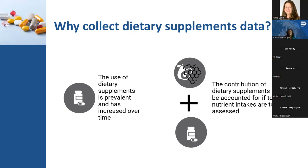As Dr. Cohen was saying, if we do not include the nutrients that come from these dietary supplements, we are likely to overestimate inadequacies of intake. And we also are likely to underestimate the intakes that are above the upper intake levels when we are looking at population level intakes. When we are looking at usual intakes, which is of importance for those of us who are looking at health-related outcomes, it is important to account for this because some intakes from both sources — foods and beverages plus supplements — can be quite high.